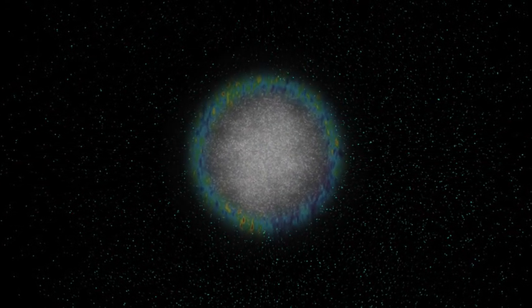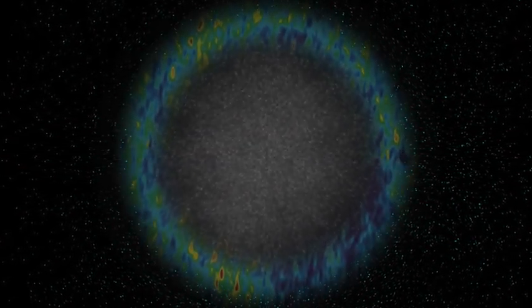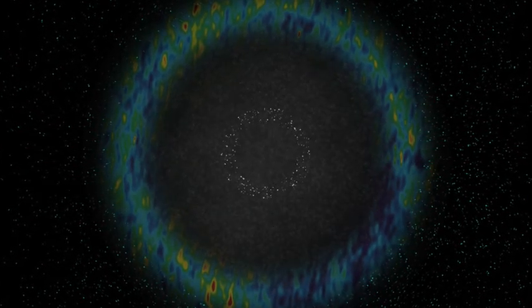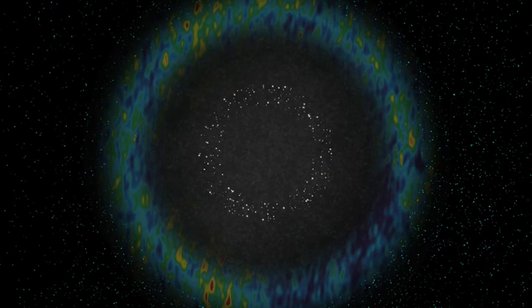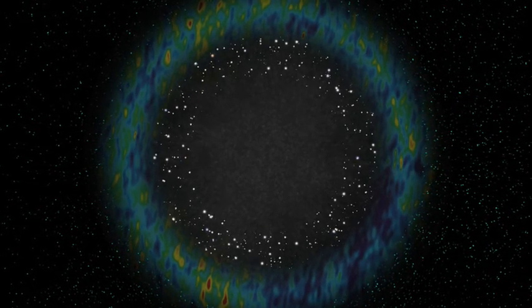So light from the microwave background was emitted from a distance of just 41 million light-years away, and that distance is now 46 billion light-years. And light from the earliest stars was emitted from a distance of 1.5 billion light-years, and that has grown to 36 billion light-years.